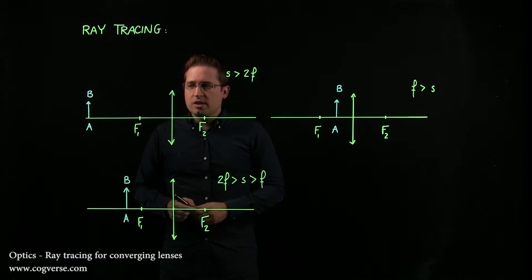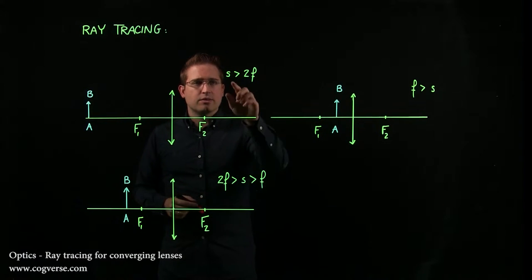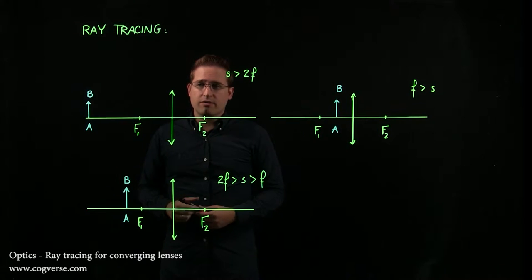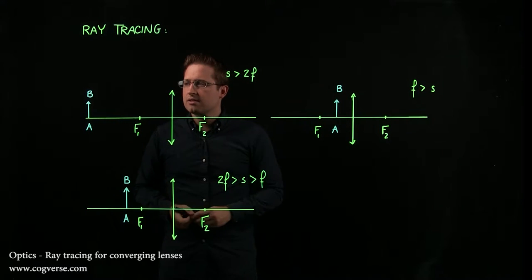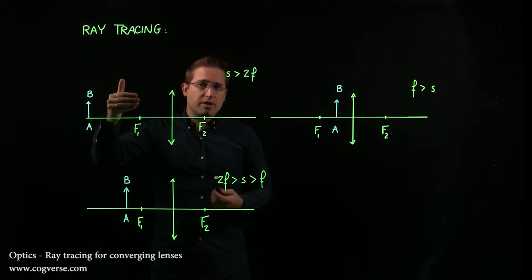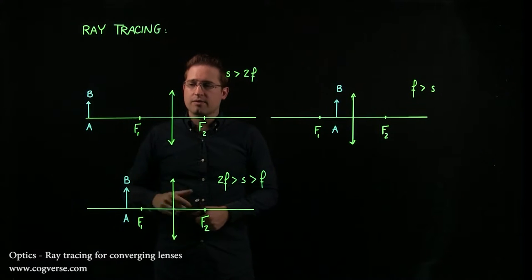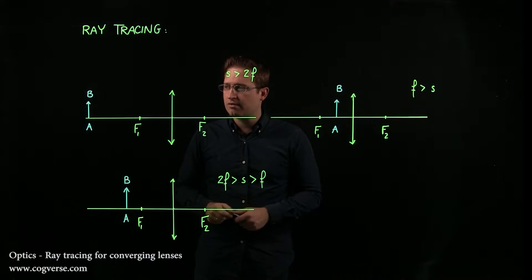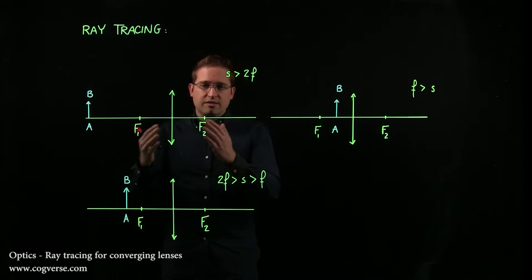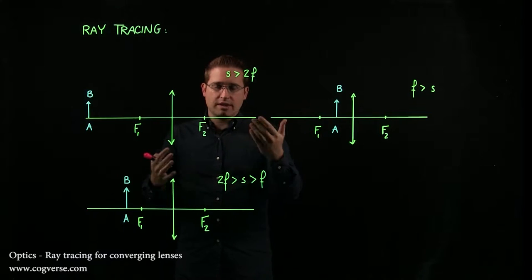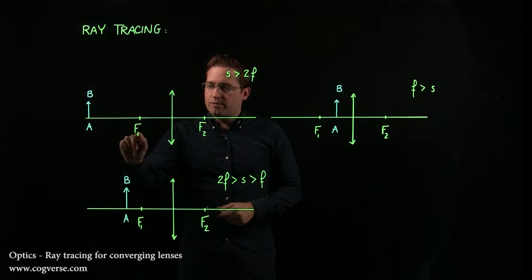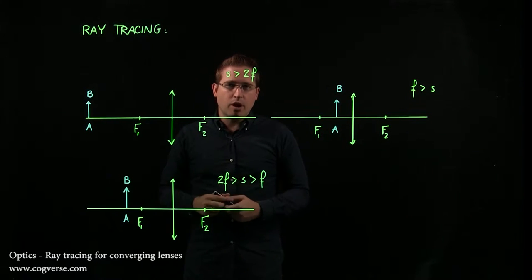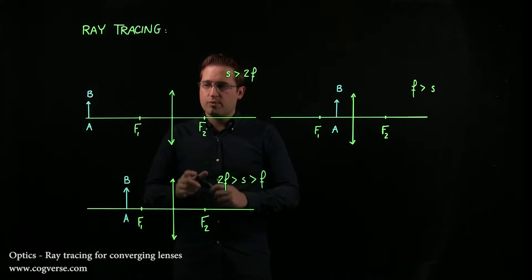Take your object AB here, that is a distance s greater than two focal lengths away from the lens, and it's a converging lens. Light will be coming from the object, so this is incoming light. Therefore, this is the front of the lens with f1, this is the back of the lens with f2. f1 and f2 have different properties, and it's important to keep track of them.